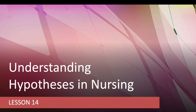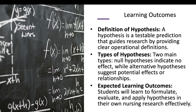Lesson 14 is understanding hypotheses in nursing. A hypothesis is a testable prediction that guides research by providing clear operational definitions. The two main types are the null hypothesis, which indicates no effect, and the alternative hypothesis, which suggests a potential effect or relationship. We usually use the null hypothesis when looking into a significant relationship in a study.